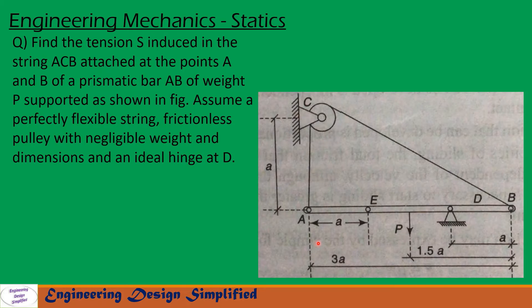In this problem, a bar AB of weight P is arranged like this. At point D, it is a hinge and at A and B, there is a perfectly elastic string attached like this. The dimensions from here to here is A, and total length is 3A, and half length of the bar is 1.5A, and from B to D is A.